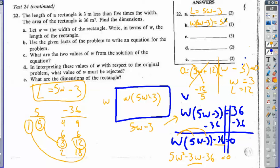So we have w times (5w minus 3) is equal to 36. What are the two values of w? What are the solutions? Well, we have our negative 12 fifths and we have our 3.